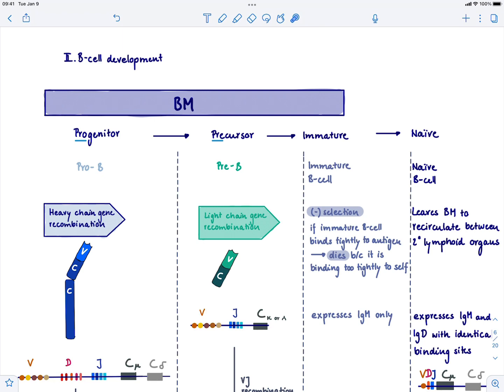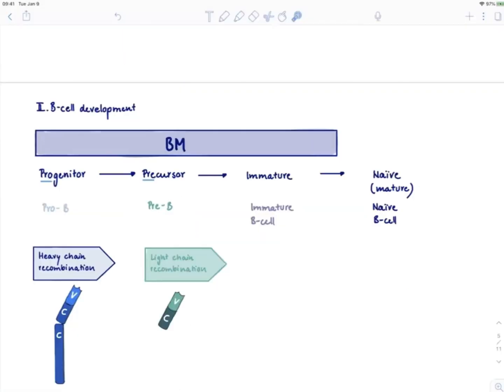The B cell needs to go through very specific education, and this education happens in the bone marrow. The B cell goes through several stages: it starts as a progenitor.